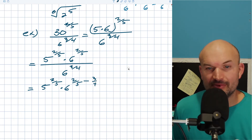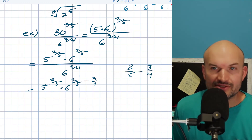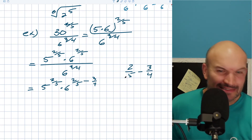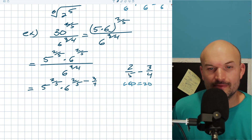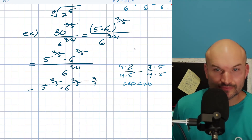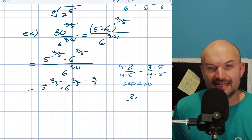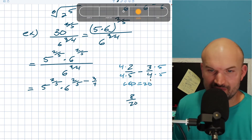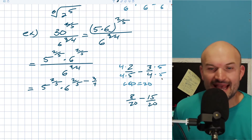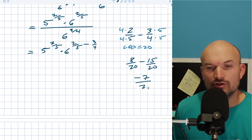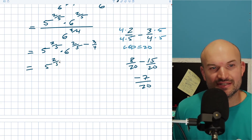So I have 2 fifths minus 3 fourths. What is the smallest number 5 and 4 evenly divide into? The LCD is 20. I'll multiply by 4 on the left-hand side and 5 on the right-hand side. So I get 8 twentieths minus 15 twentieths, and 8 minus 15 gives me negative 7. So that's negative 7 twentieths. I have 5 to the 2 fifths times 6 to the negative 7 twentieths.